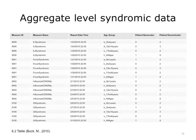Benefits to using aggregate data include that it inherently protects patient confidentiality — we may know there is one case but not who that person was. Aggregate data is also simple to use, with no need for epidemiologists to do additional programming. On the other hand, aggregate data can be difficult to validate for accuracy, and it may be difficult to get more information on a case when needed — for example, when an epidemiologist is conducting an investigation.